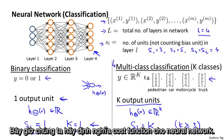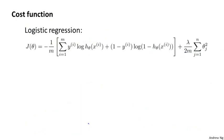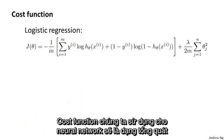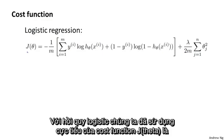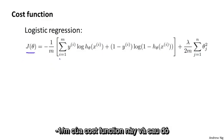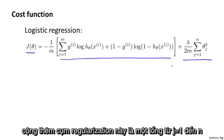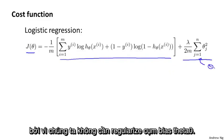Now let's define the cost function for our neural network. The cost function we use for the neural network is going to be a generalization of the one that we use for logistic regression. For logistic regression, we used to minimize the cost function J(theta) that was minus one over m of this cost function and then plus this extra regularization term here, where this was a sum from j equals one through n because we did not regularize the bias term theta zero.